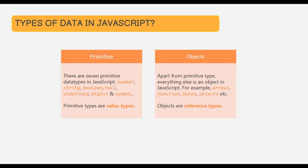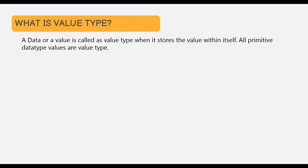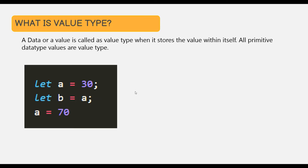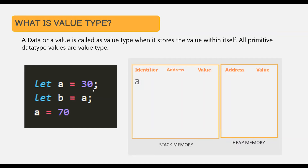A data or a value is called a value type when it stores the value within itself, and all primitive data type values are value types. Let's understand this with an example. Here we have a simple program where we create a variable A and assign it the value 30. In memory, an identifier called A will be created. Since 30 is a primitive value and therefore a value type, this 30 will be stored in the stack memory. This identifier A will point to that memory address — so this variable A is storing this value 30. This is what a value type is: it stores a value within itself.